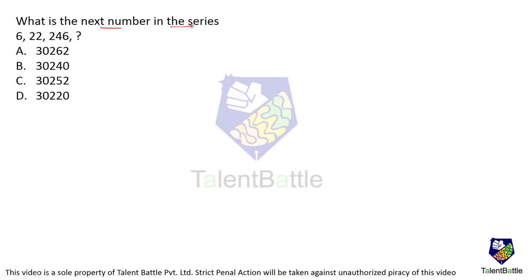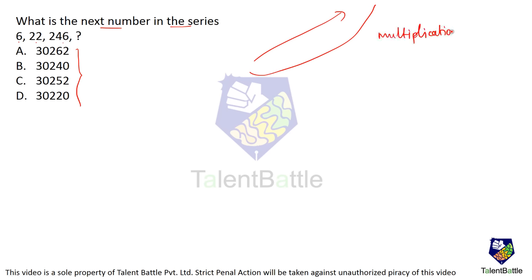What is the next number in the series? If you observe closely, the numbers are 6, 22, 246, and the options given are around 30,000-something. The numbers are increasing very, very fast. This exponential rise can only happen because of multiplication — some sort of powers like squares or cubes. If it were decreasing, it would be division. Since it is increasing, it is definitely because of multiplication.